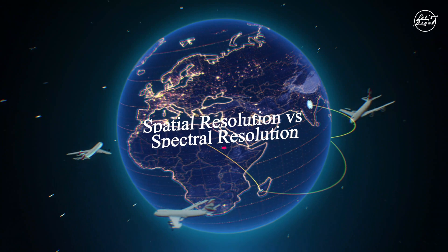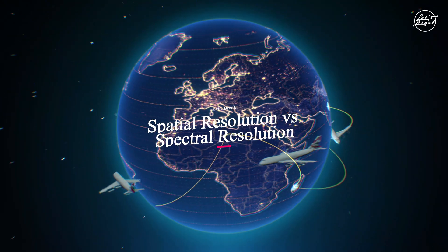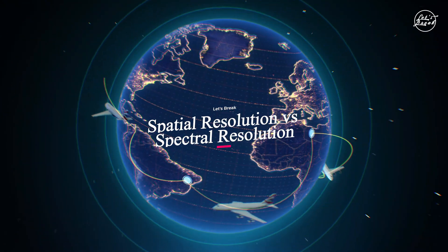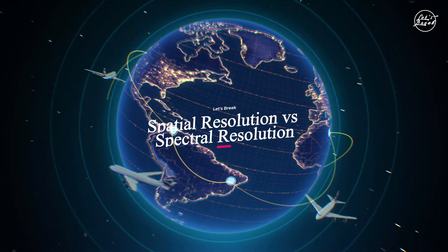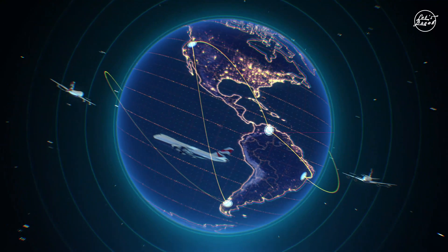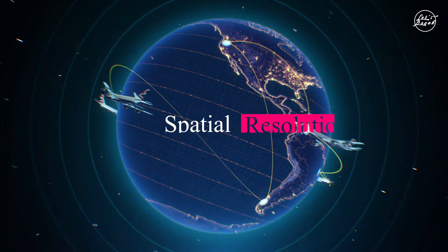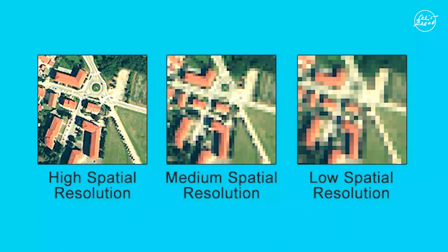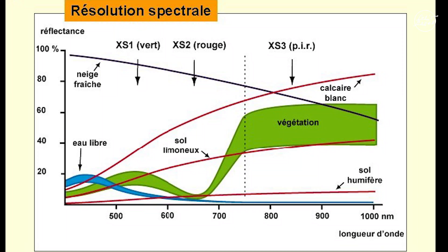What's the difference between spatial resolution and spectral resolution? Spatial resolution is a measurement of how detailed objects are in an image based on pixels, whereas spectral resolution is the amount of spectral detail in a band based on the number and width of spectral bands. Let's get into both concepts of image resolution with a bit more detail.